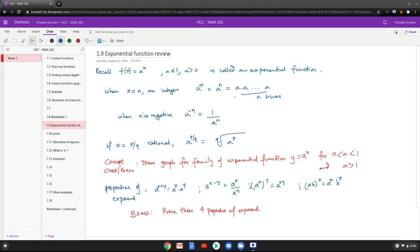When it's an integer, it just means you're multiplying a n times. When it's negative, it means it's 1 divided by a to the n. If it's rational, it can be written as p over q, then it can be considered as the qth root of a to the power p.